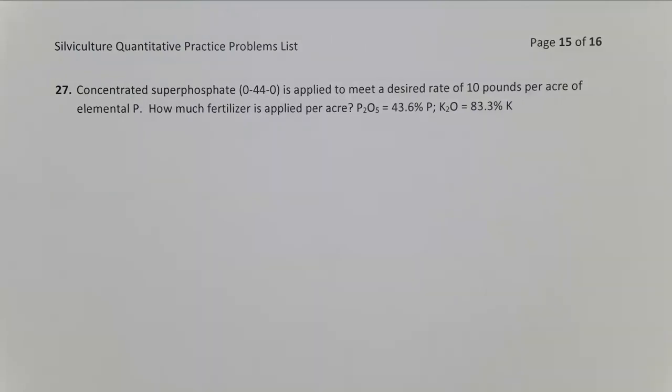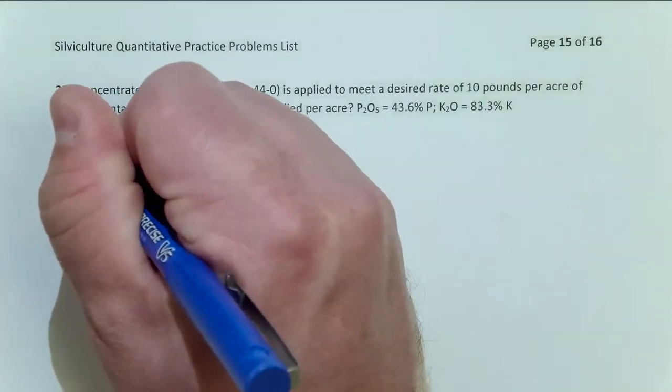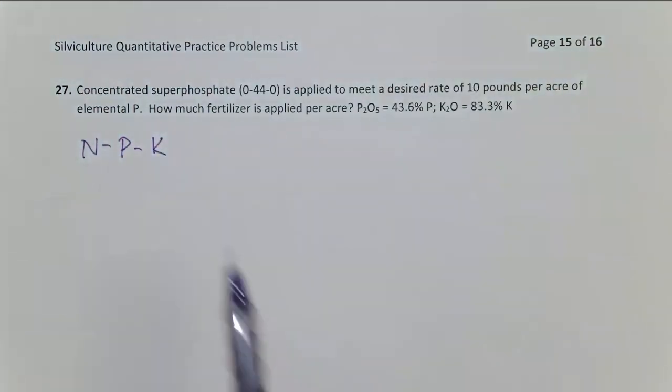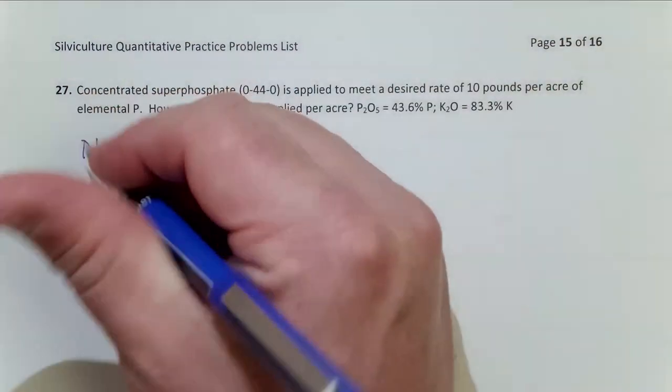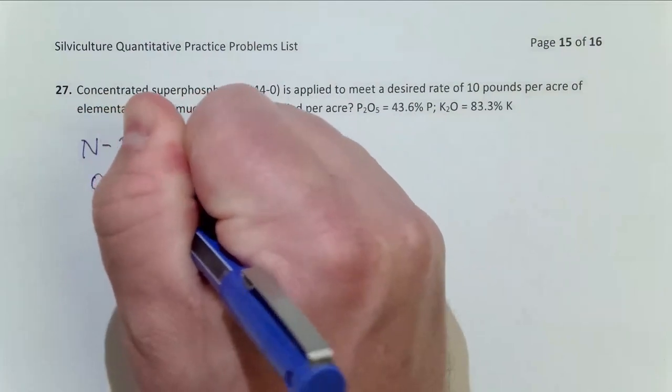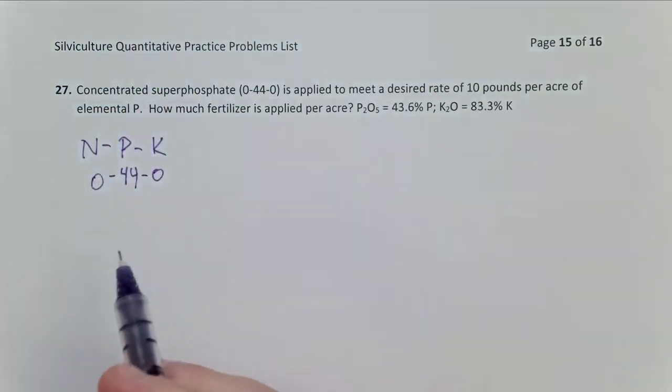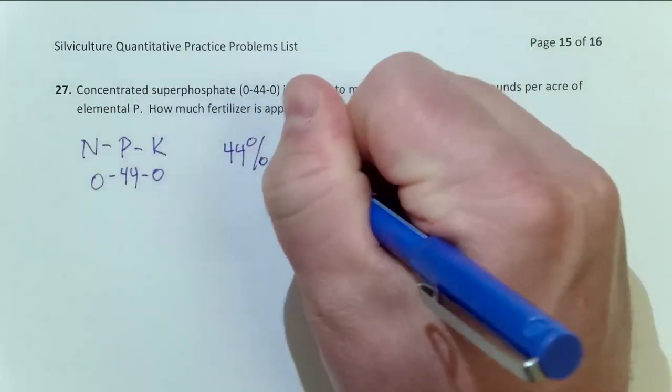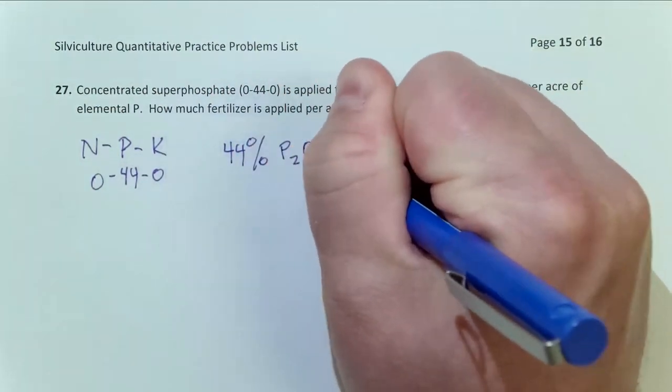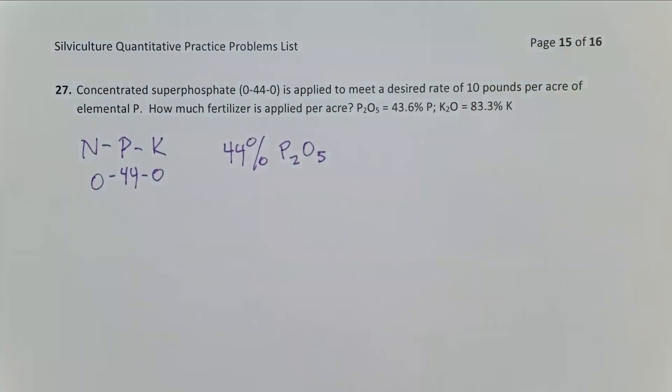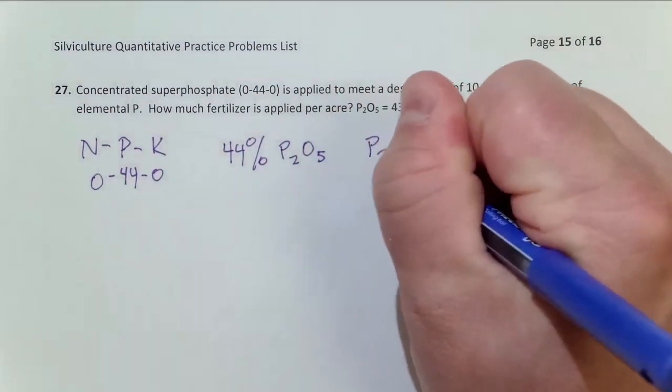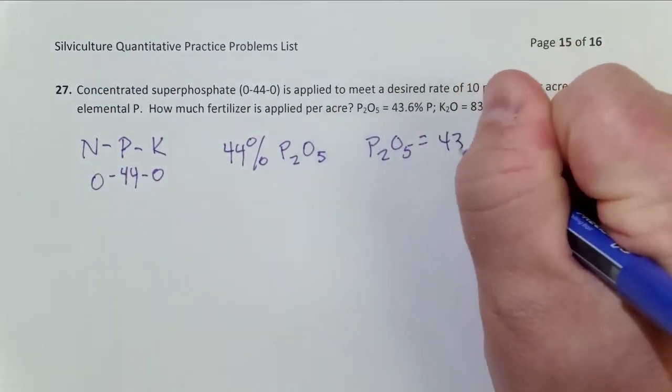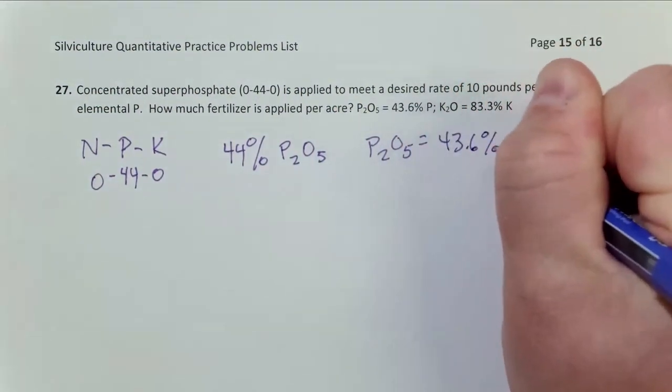So let's look. We know that our fertilizers are labeled N-P-K, right? So concentrated superphosphate is going to be 0-44-0. So we know that it is 44 percent P2O5 and we know as it's given up here that P2O5 is 43.6 percent P.